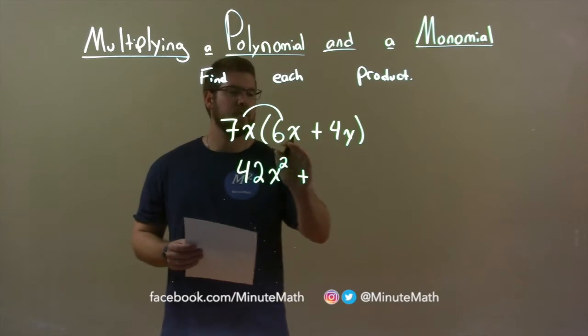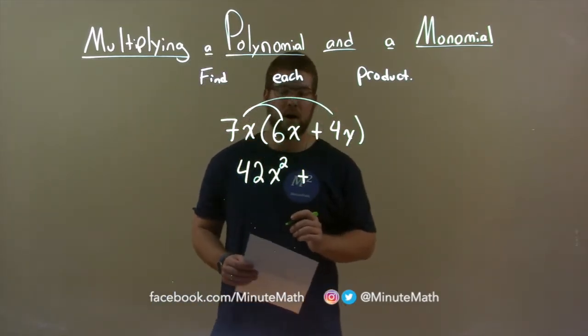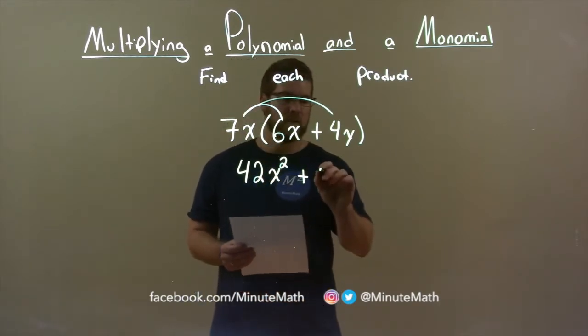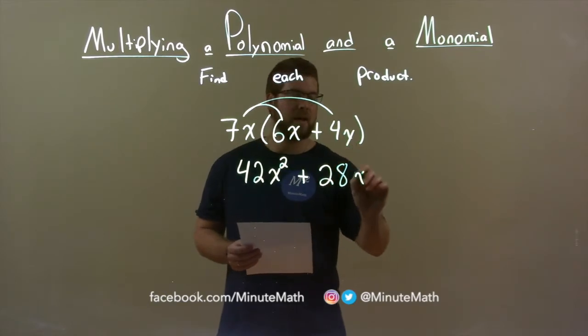Addition separates the two terms in the parentheses, so now we multiply 7x times 4y. 7 times 4 is 28, and x times y is just xy.